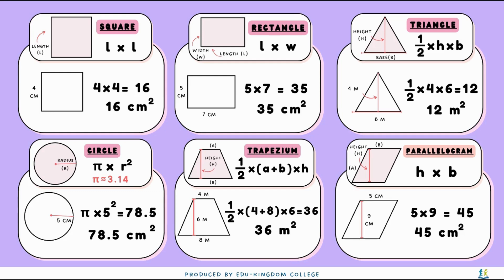Lastly, for this parallelogram, 5 times 9 gives us 45. So the area is 45 centimeters squared.